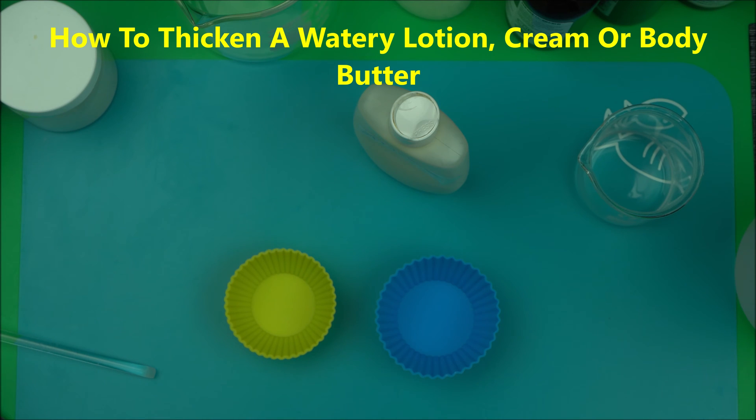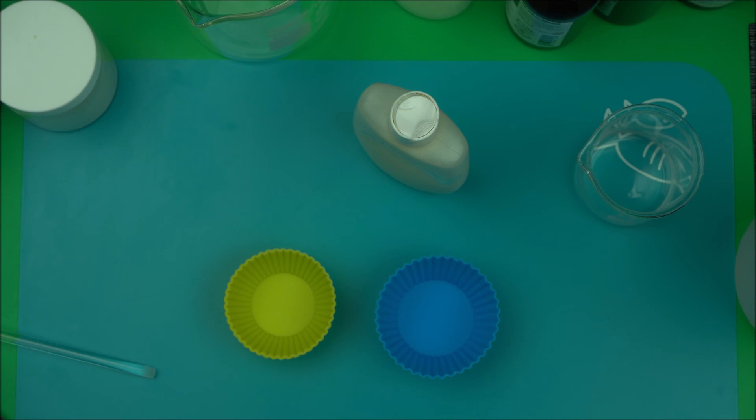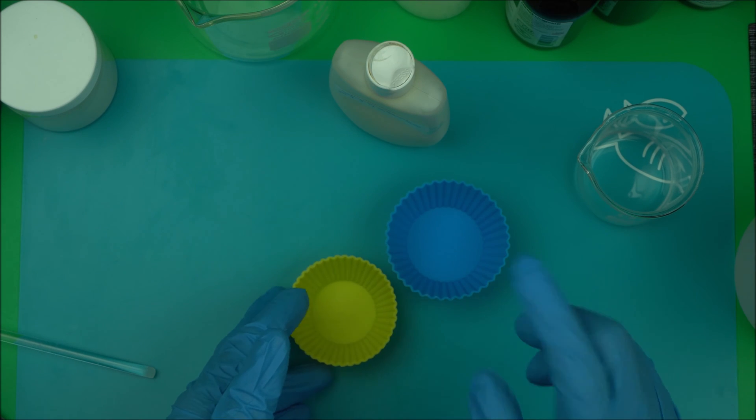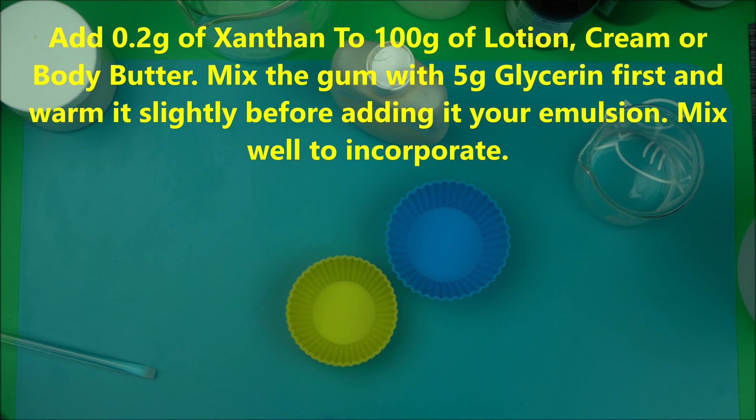This is very important, especially when you're making a product that's valuable and you don't want to lose it. What you can do is add a gum to your product. Now don't just add your gum to it - you have to measure it. I'm going to demonstrate how to thicken a runny lotion.